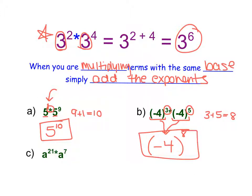In part C, we have common bases of A. So we take A as the base, add the exponents together, and get an exponent of 28.